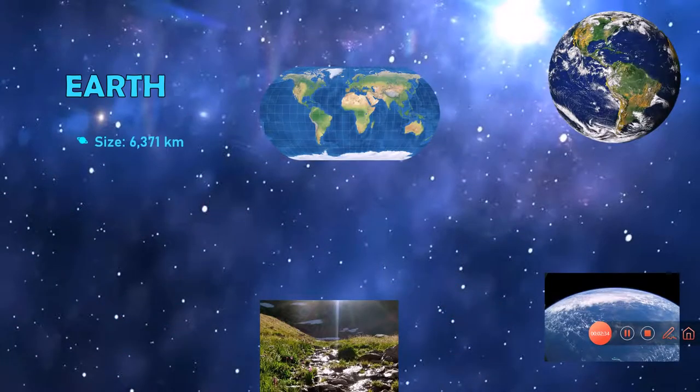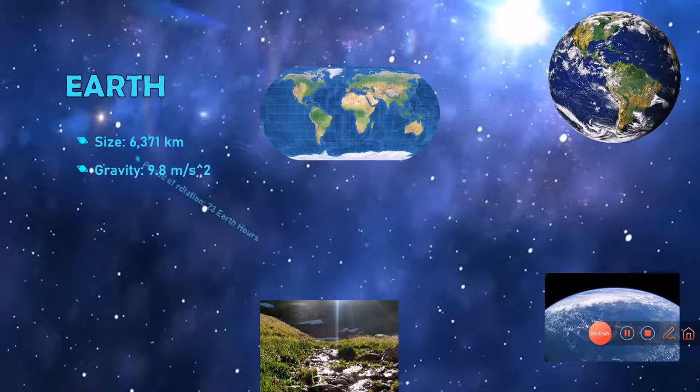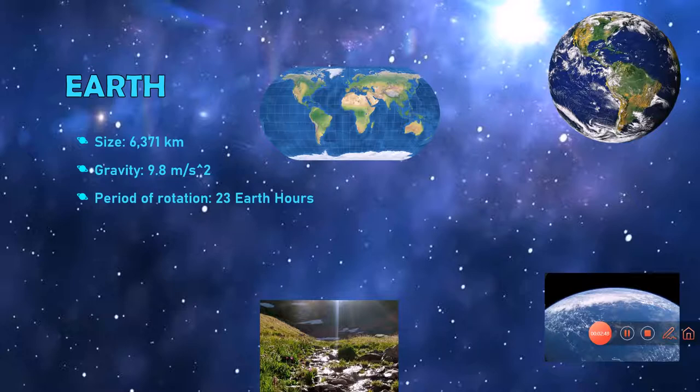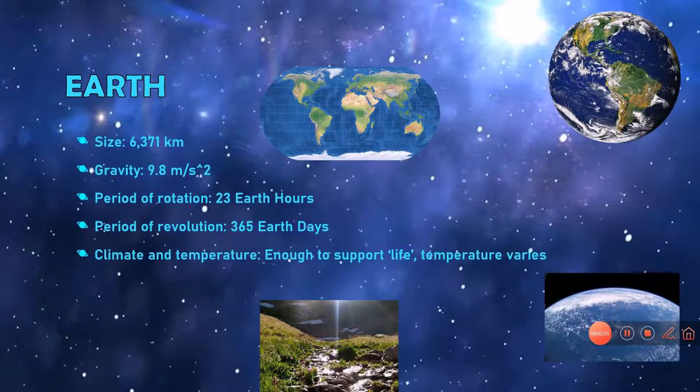Earth. We all live on planet Earth and its size is 6,371 kilometers. Earth's gravity is 9.8 meters per second squared. Earth's period of rotation or its day is approximately 23 Earth hours. Its period of revolution is 365 Earth days. Earth's climate and temperature: it's enough to support life and its temperature varies wherever you go.